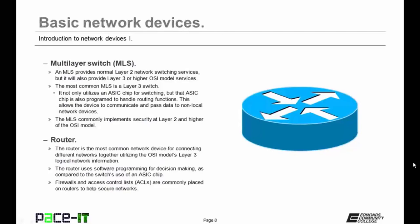Then we have the multi-layer switch, or MLS. An MLS provides normal Layer 2 network switching services, but it will also provide Layer 3 or higher OSI model services. The most common MLS is called a Layer 3 switch. It not only utilizes an ASIC chip for switching, but that ASIC chip is also programmed to handle routing functions. This allows the device to communicate and pass data to non-local network devices. The MLS commonly implements security at Layer 2 and higher of the OSI model.